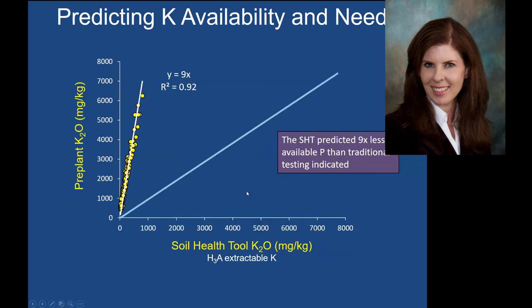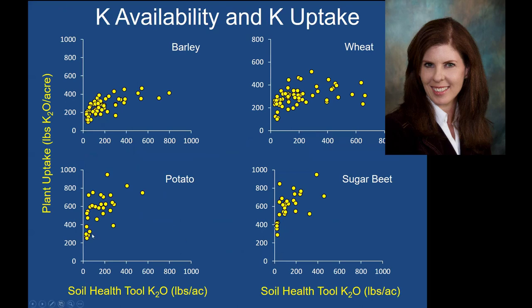Looking at potassium availability, there was a really good relationship between the soil health tool potassium and our pre-plant potassium using the Olsen extraction method. But again, the soil health tool predicted nine times less available potassium than the traditional tests indicated. So overall, in terms of N, P, and K, using the soil health tool showed that we had less available nutrients in the soil than when we use our standard pre-plant testing, which would actually increase the amount of fertilizer recommended for these fields. Even on control plots where the soil health tool predicted very low amounts of potassium, the plants had plenty of potassium to take up.